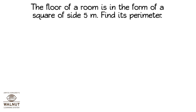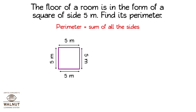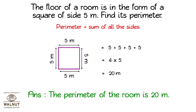The floor of a room is in the form of a square of sides 5 meters. Find its perimeter. Perimeter is equal to sum of all the sides, equal to 5 plus 5 plus 5 plus 5, equal to 4 into 5, which is equal to 20 meters. The answer is the perimeter of the room is 20 meters.